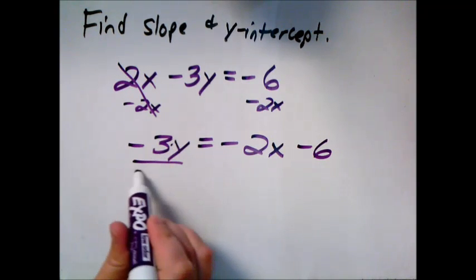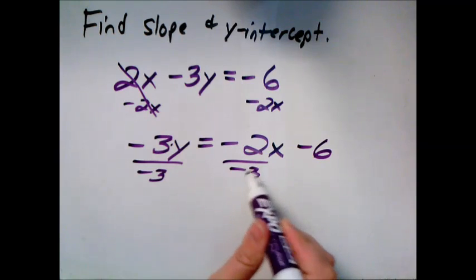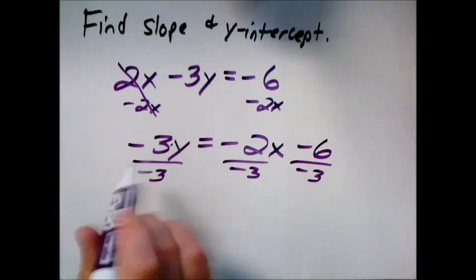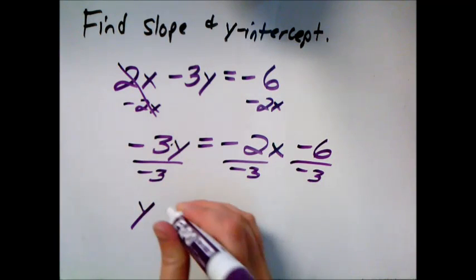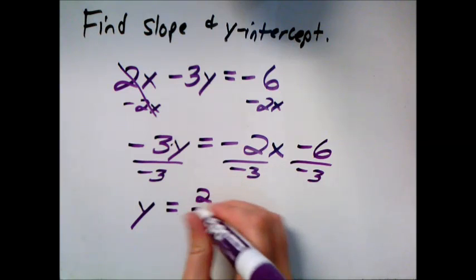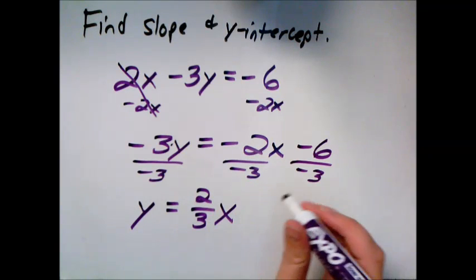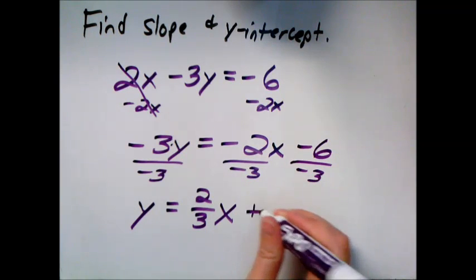And so now this is multiplied by negative 3, so I'll divide everything by negative 3. Remember, it's everything, so all the terms. So here the negatives cancel, so 2 thirds x, and negative 6 divided by negative 3 is 2.